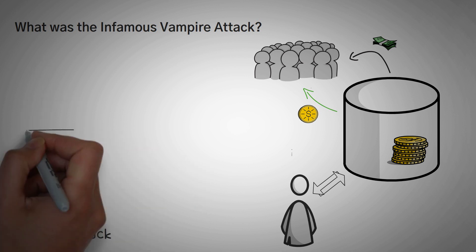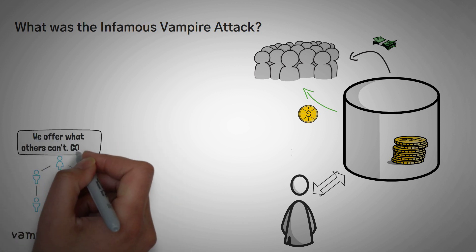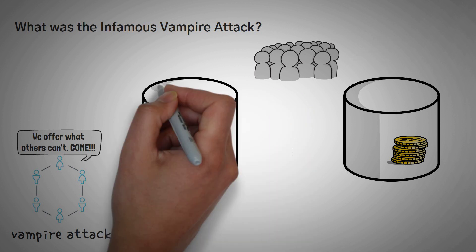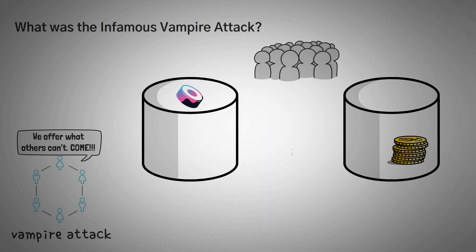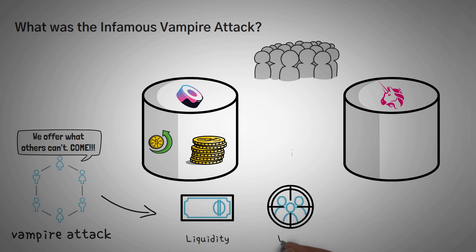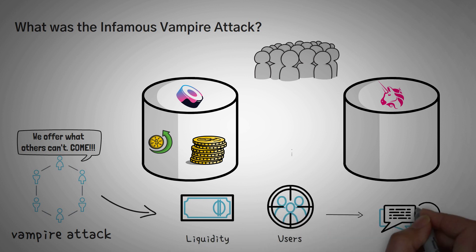To put it simply, a vampire attack is when one DeFi protocol offers better rates to attract investors from another platform. One of the most famous vampire attacks happened with SushiSwap — they were simply able to offer one of the best liquidity provider rates to any investor on their platform, causing a lot of people to pull their liquidity from Uniswap and put it into SushiSwap instead. A vampire attack attempts to gain three things: liquidity, users, and when you combine both, trading volume — which means fees and rewards for investors.